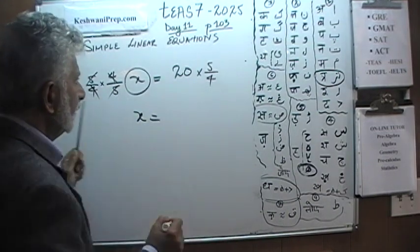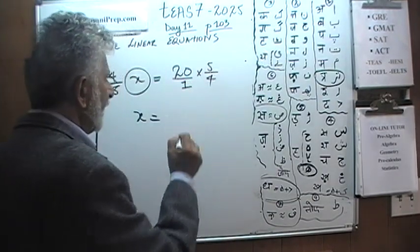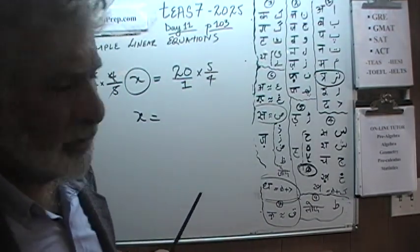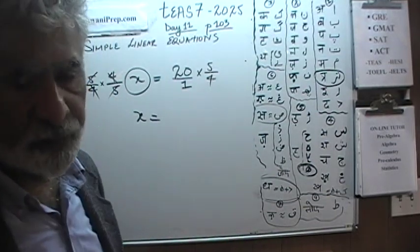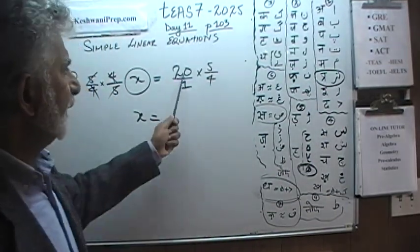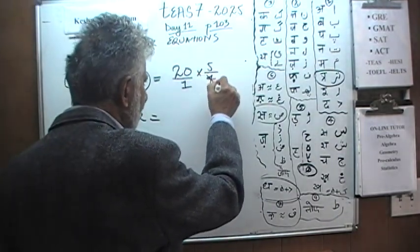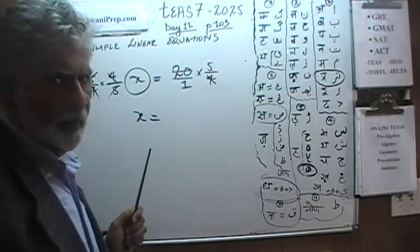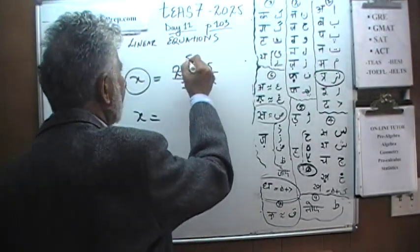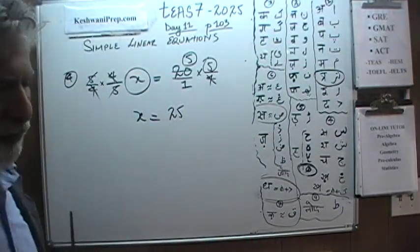Now, if we divide top and bottom by 5, we can get rid of this 5. And if we divide top and bottom by 4, we can get rid of this 4. All we are left with is x. x equals 20 times 5 over 4. If it helps you visually, put a 1 underneath so you can see that this is also a fraction. Let's divide top and bottom by 4. This 4 is going to go away. 20 divided by 4 is 5. We are left with 5 times 5 which is 25. x equals 25.